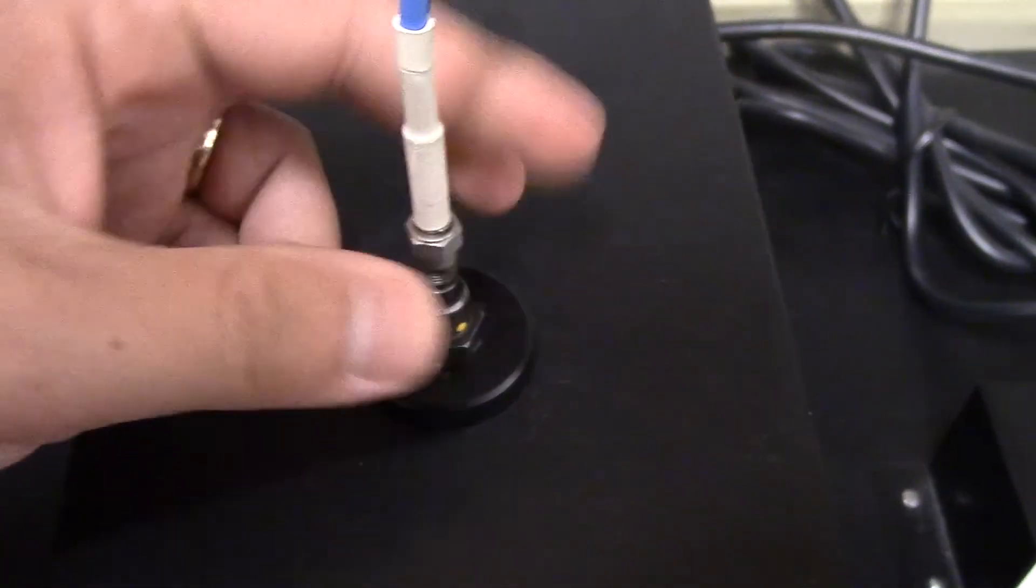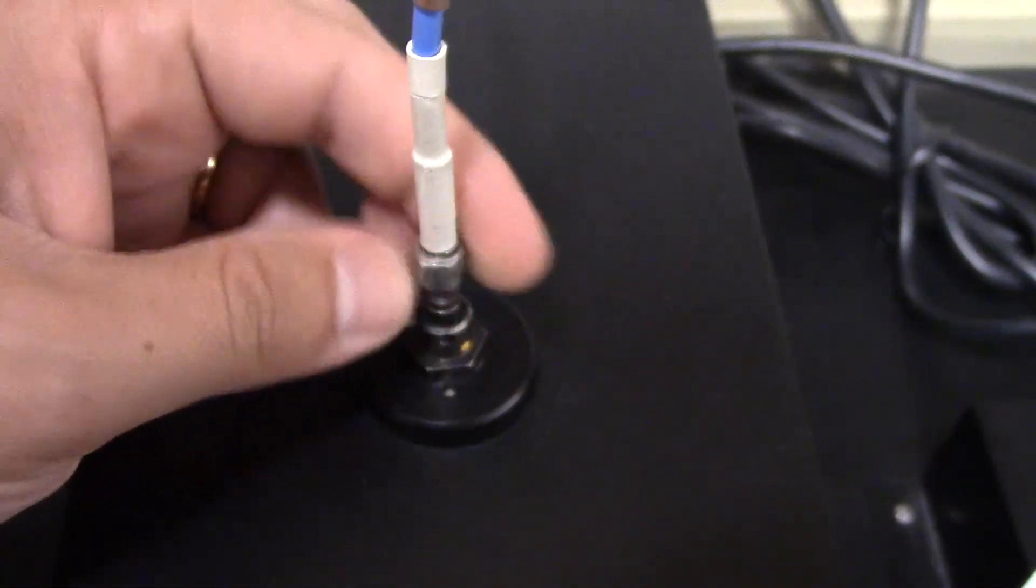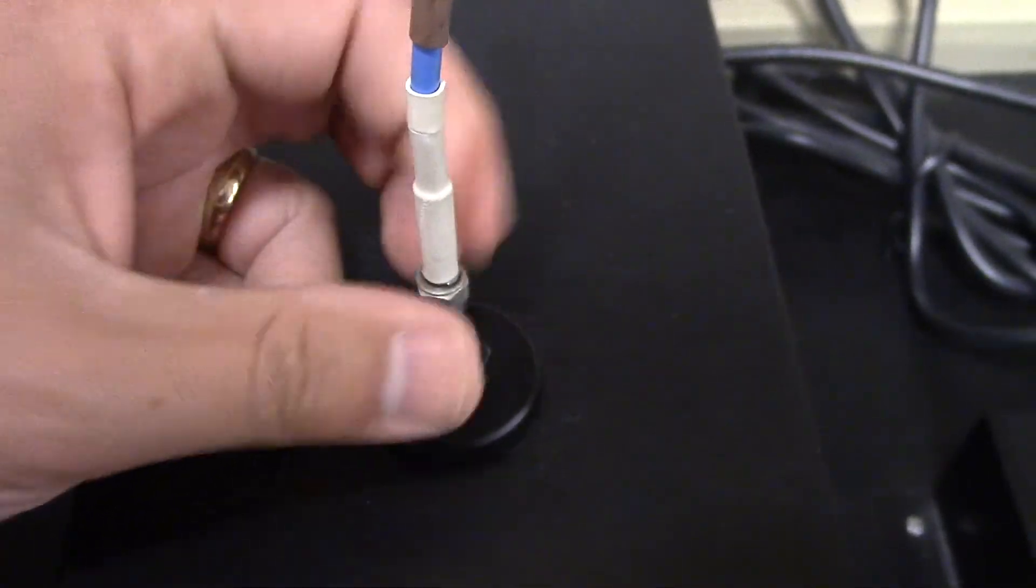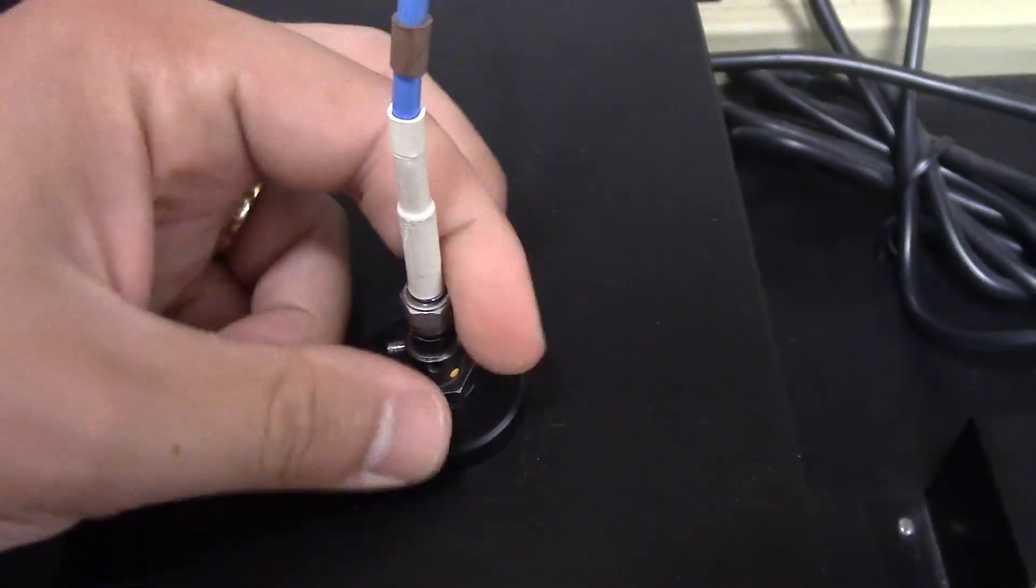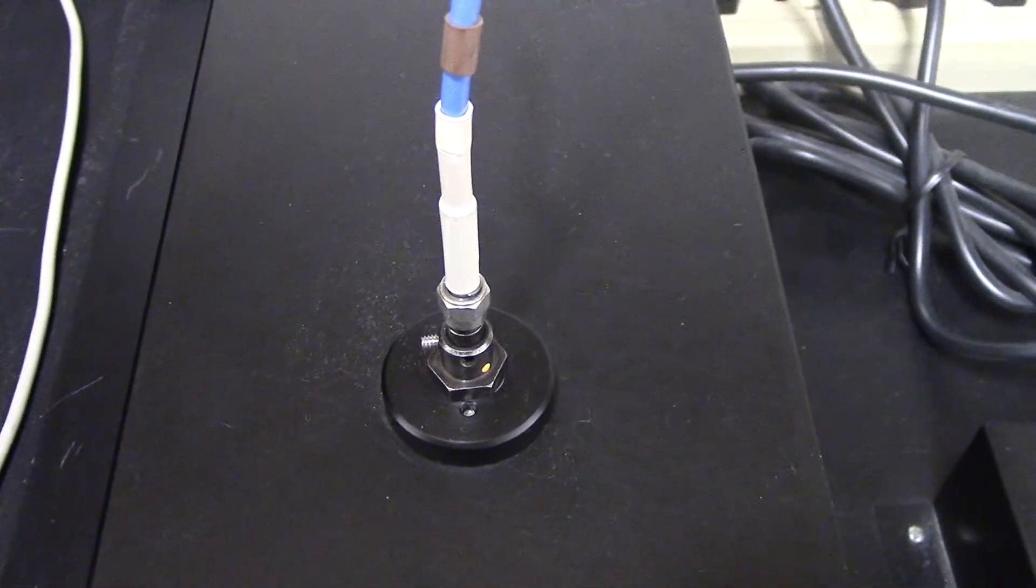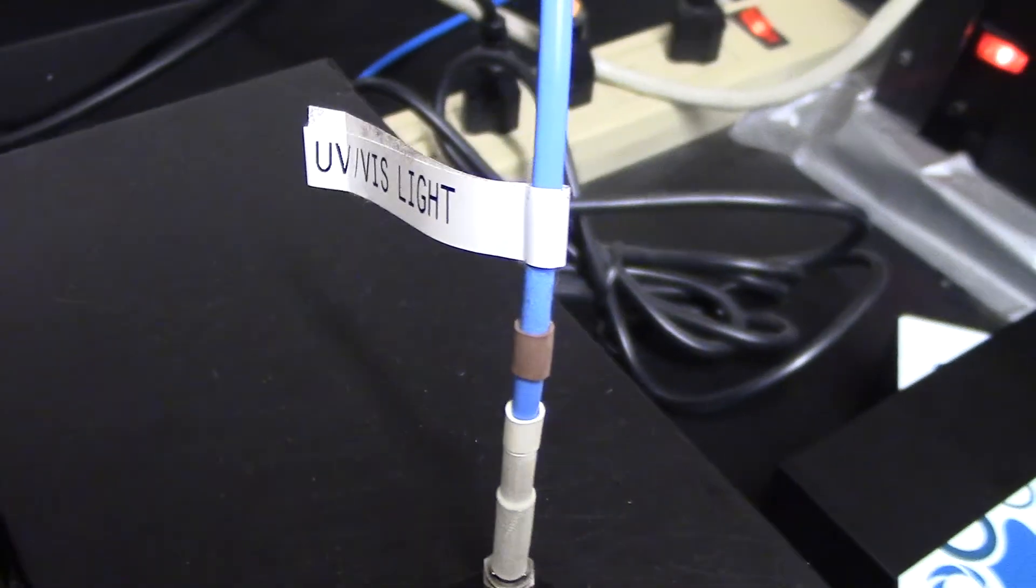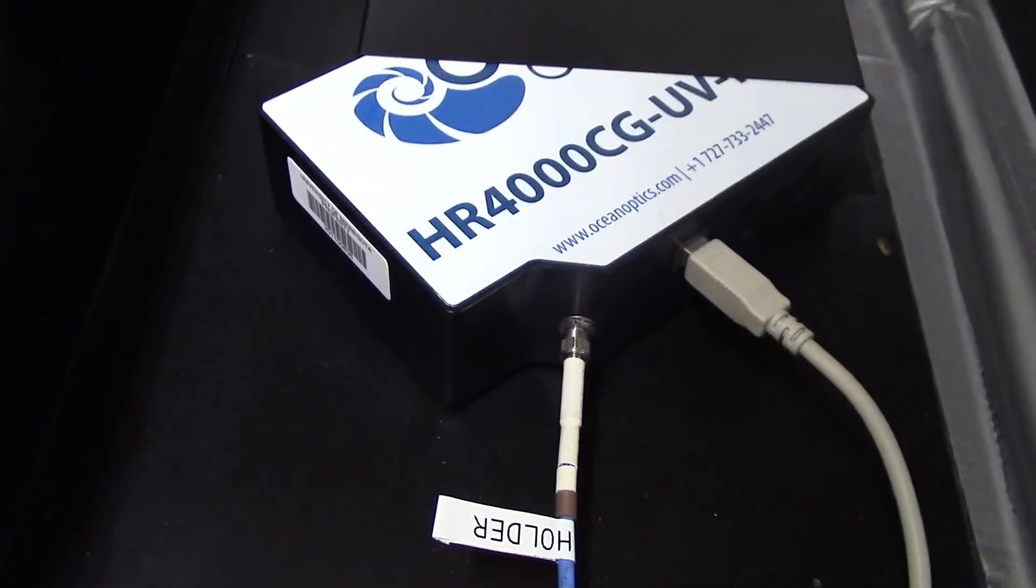Here you can see how this experiment actually works. You begin by connecting a fiber optic cable to the emission lamps. This cable passes light from the lamp, along the length of the cable, to the ocean optic spectrometer, where it's analyzed.